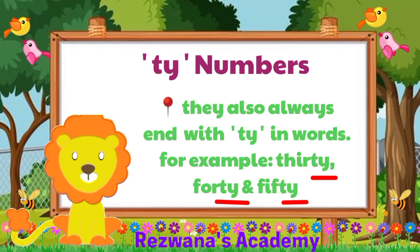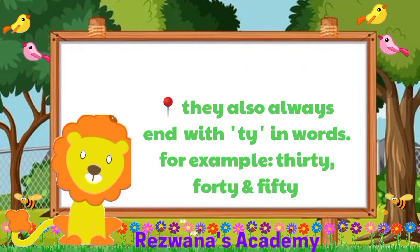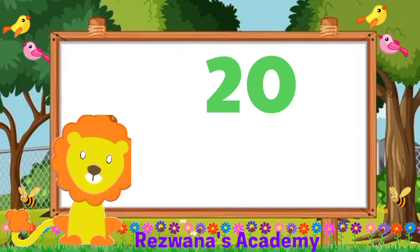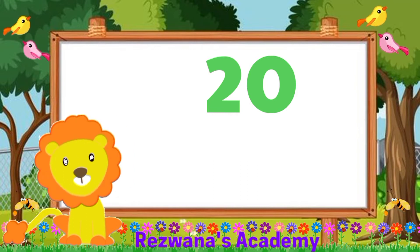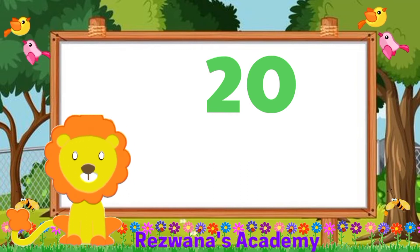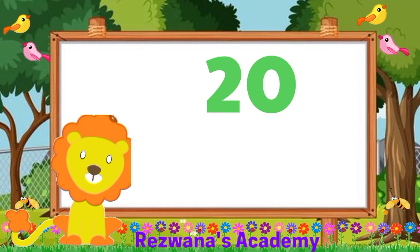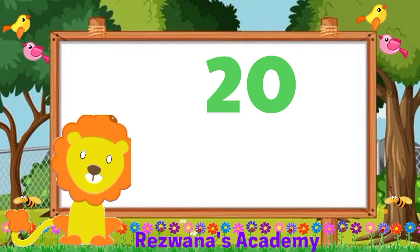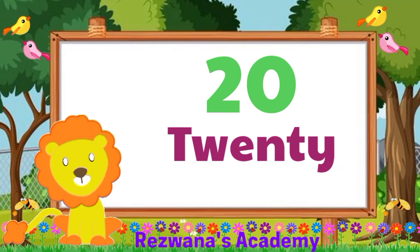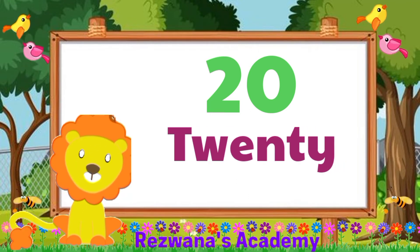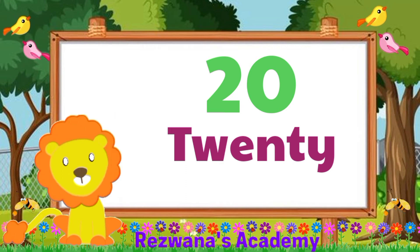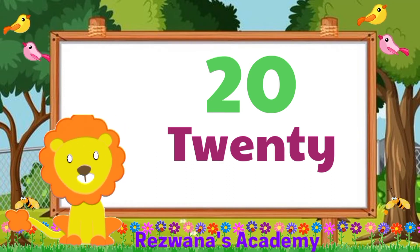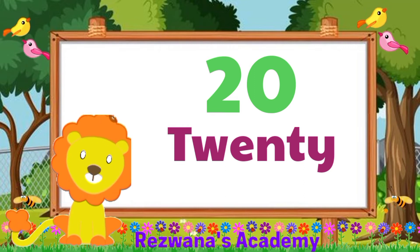Now let's see the T numbers one by one. Can you tell me which T number is this? Well done. This is number 20. It is made of 6 letters. Let's spell them together: T, W, E, N, T, Y. 20. That's great.